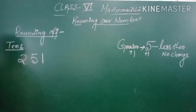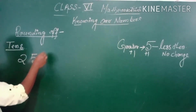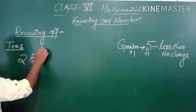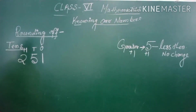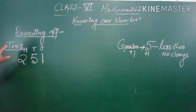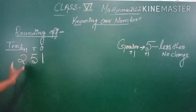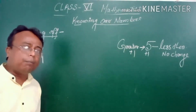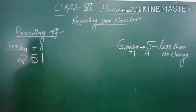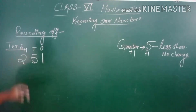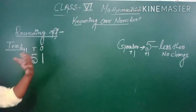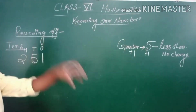Suppose the number is 251. You know the place values: 1 is the units place, 5 is the tens place, 2 is the hundreds place. Now suppose I have to round up this number to the nearest 10. I have to see the tens digit.